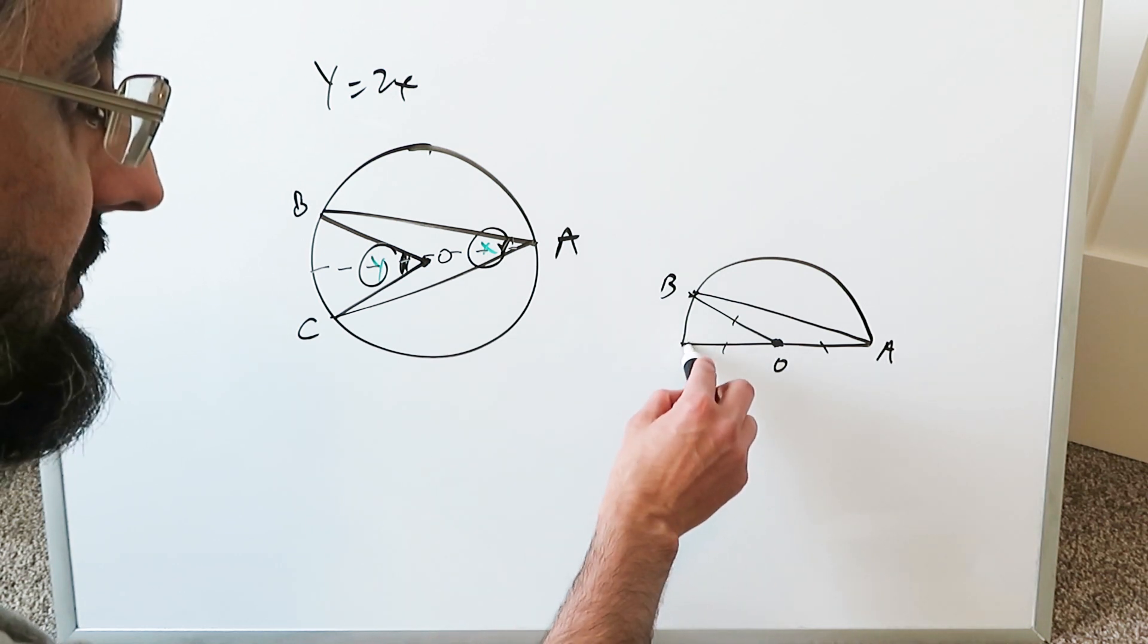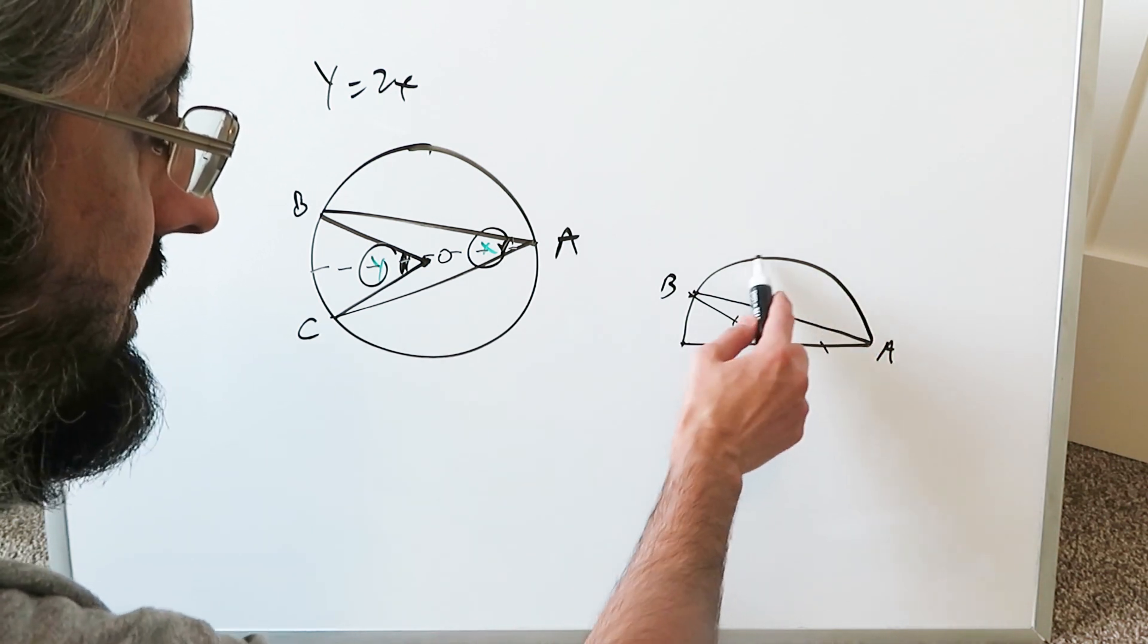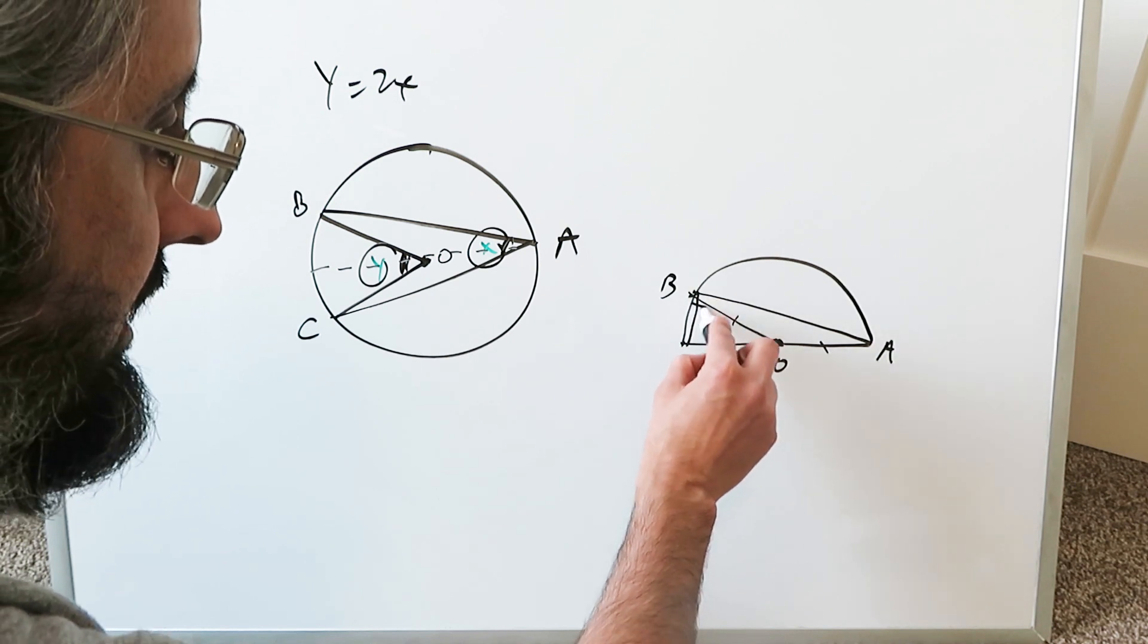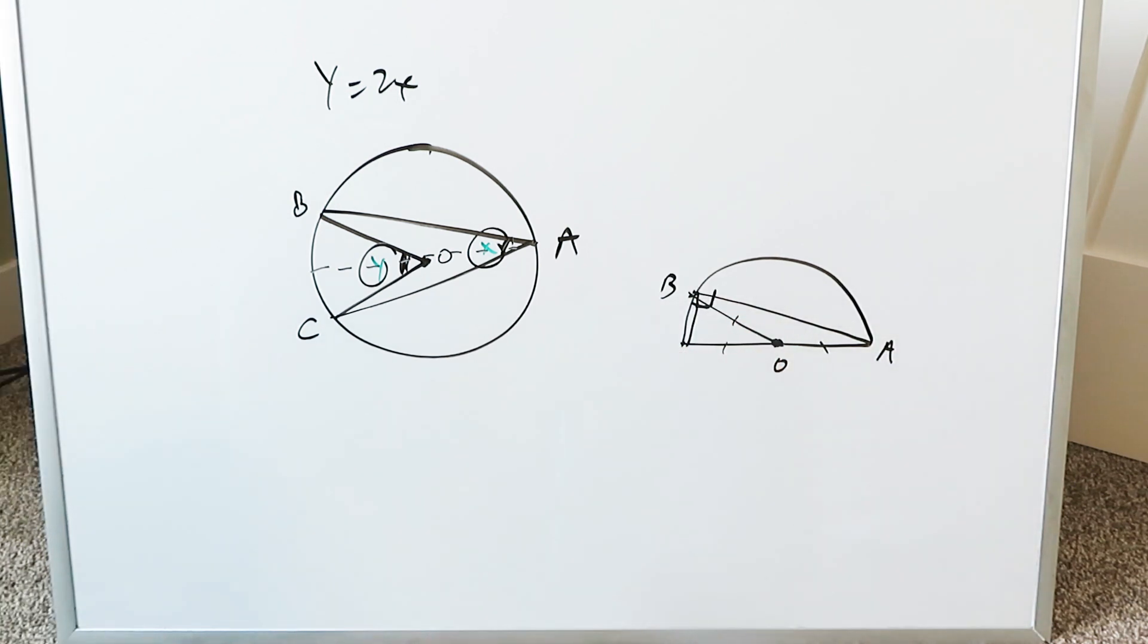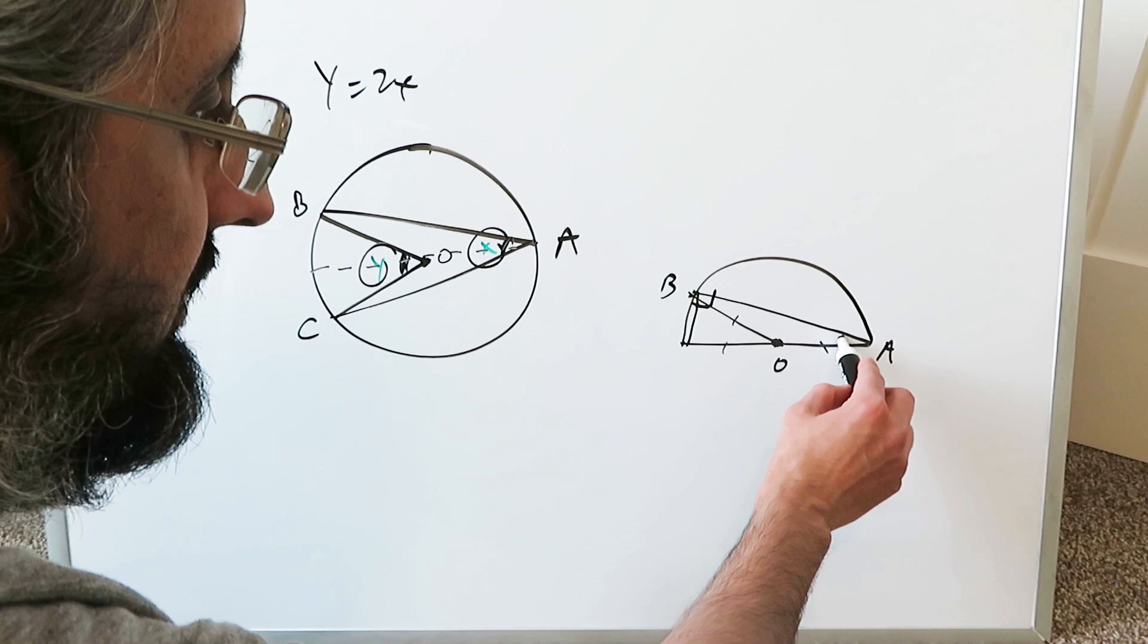If you remember that specific property: the endpoints of a diameter connected to any point on the circle will always generate 90 degrees, and that angle right there is 90 degrees. If you want to call this angle X.